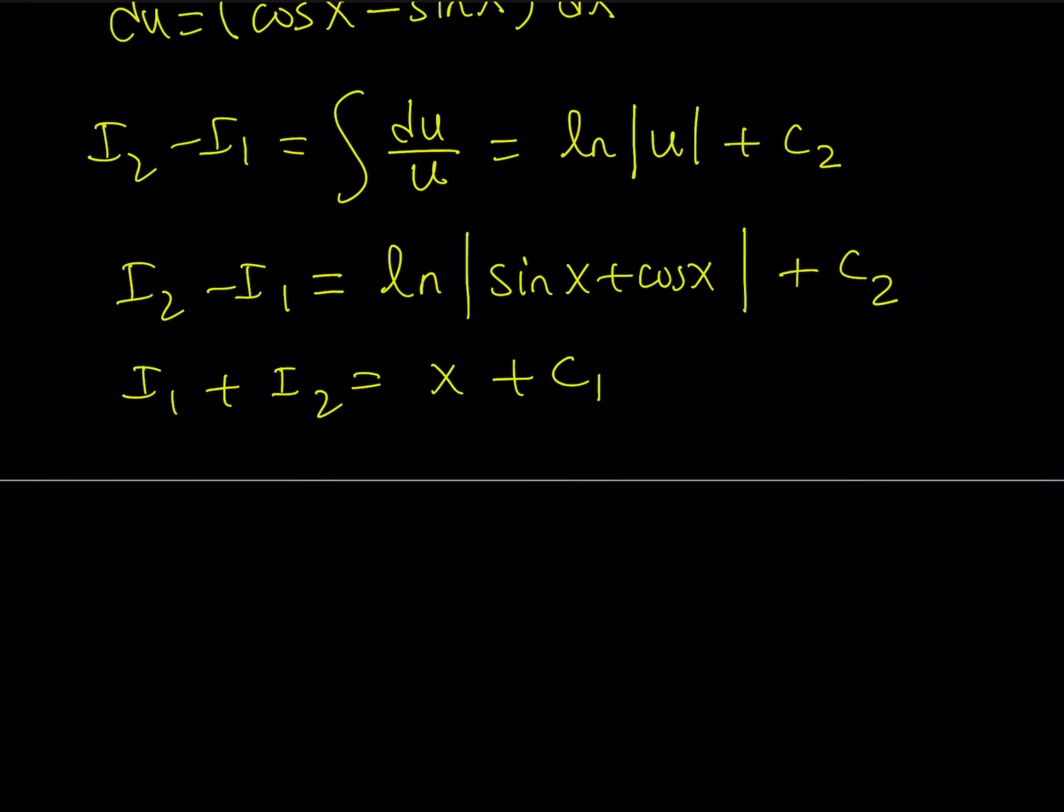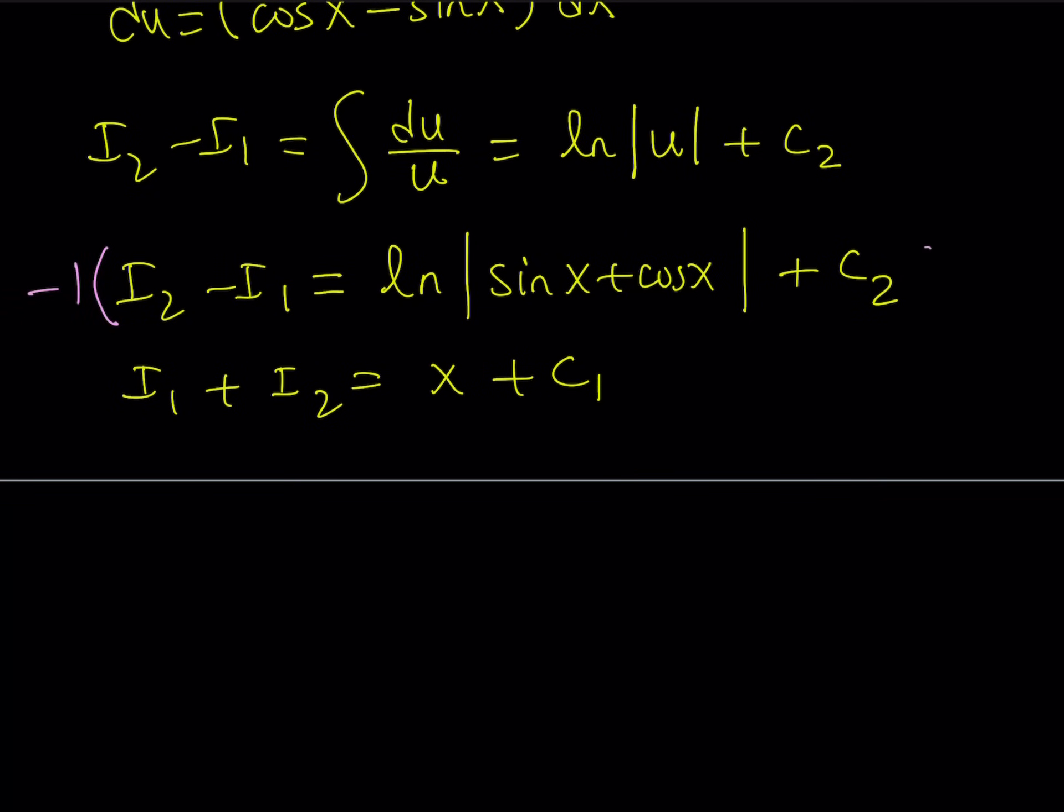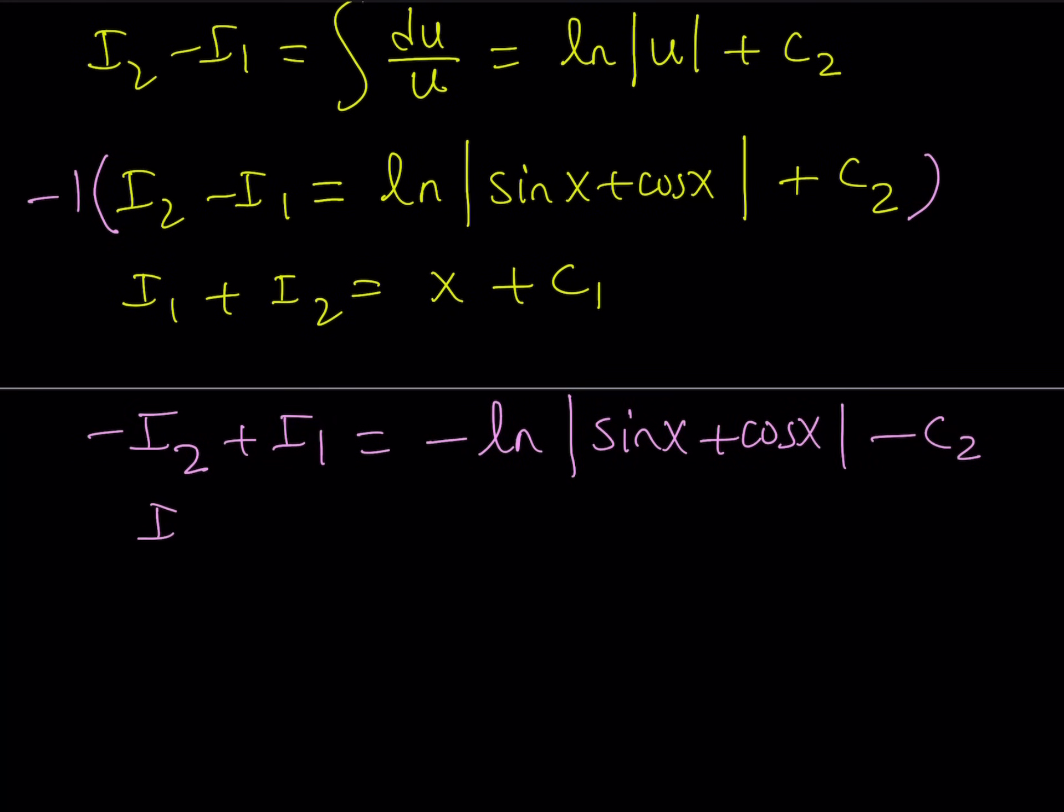This is a system of equations. We no longer have integrals, so this should be easy to solve. No more calculus. It's just algebra from now on. Since I'm trying to solve for i1, I would like to negate the first equation. I'm going to multiply the first one by negative 1. And that's going to give me negative i2 plus i1 equals negative ln absolute value of sine x plus cosine x minus c2. Now I have i1 plus i2 as x plus c1. So now I can go ahead and add these two equations because that's going to eliminate i2.